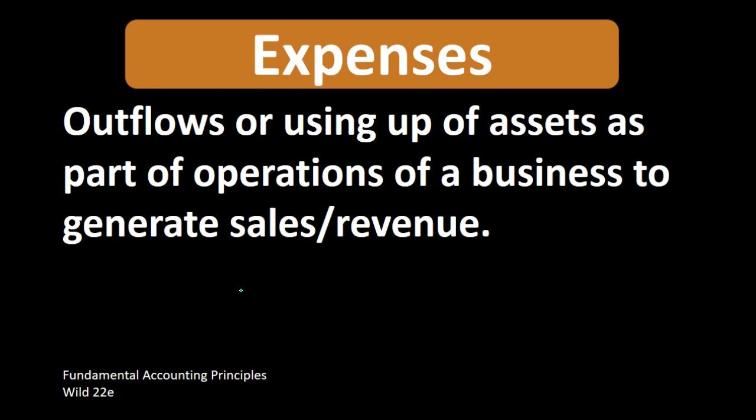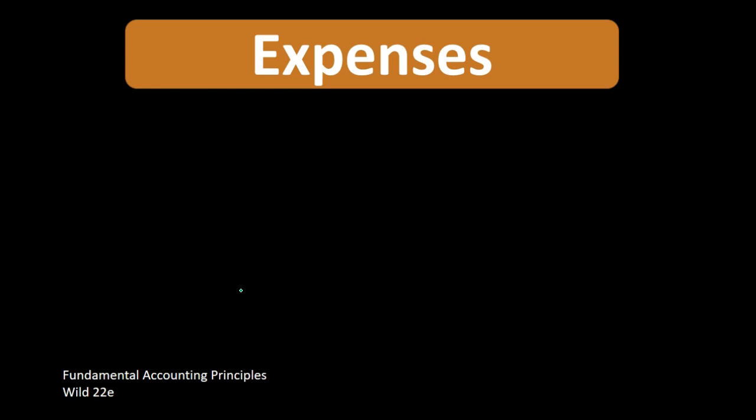We usually have some idea of what expenses are — if we asked someone, we'd probably hear a list of expenses as an answer. But when we actually record expenses, we often get confused about what's an expense versus what's an asset. If we purchase something and consume our cash to receive something, is that thing we received an expense or an asset? The point in time that we consume that asset is when it turns into an expense.